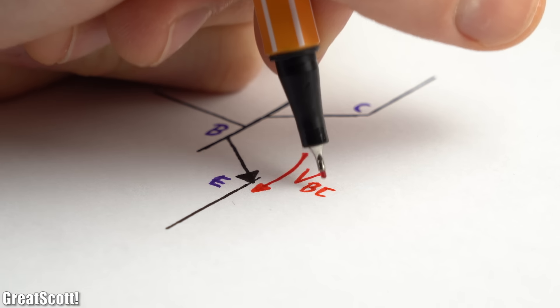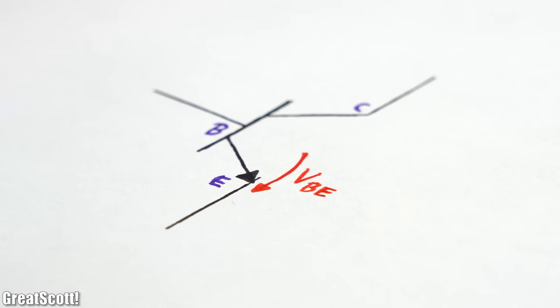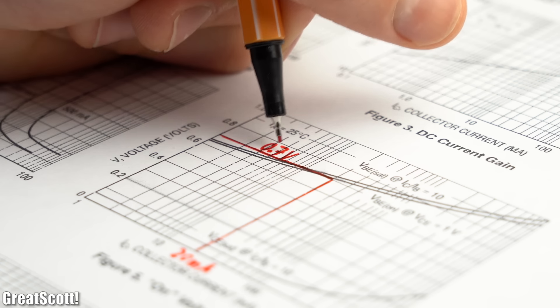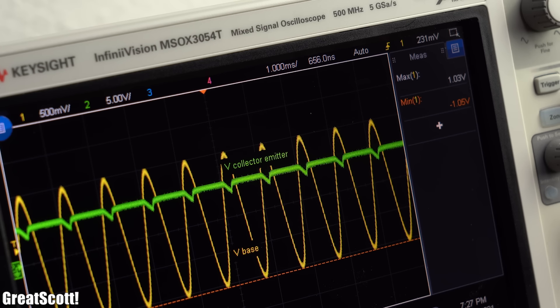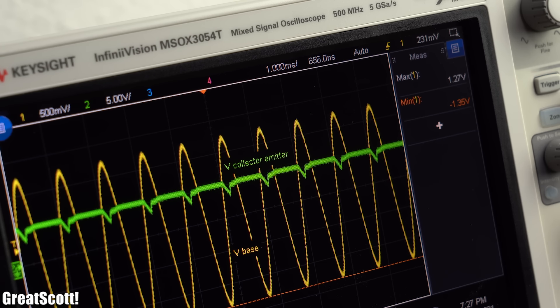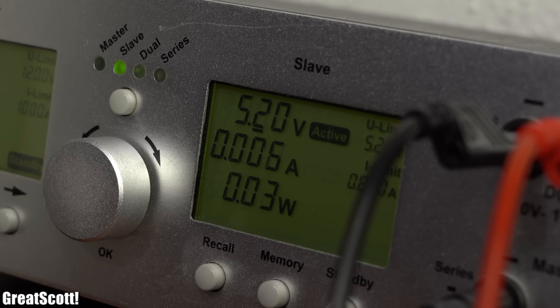The problem is the voltage drop across the base-emitter path, which is around 0.7V. So we have to increase the sine voltage maximum above this value before anything happens on the output side of the BJT.